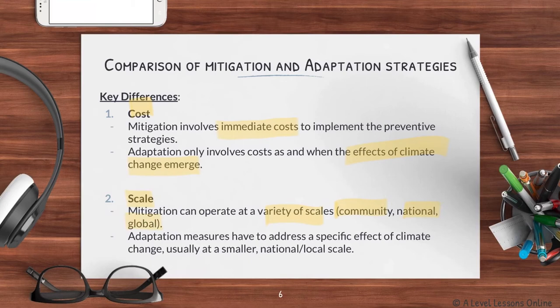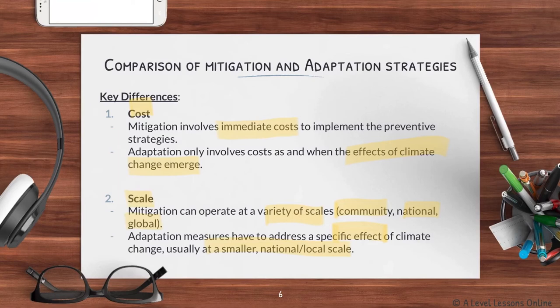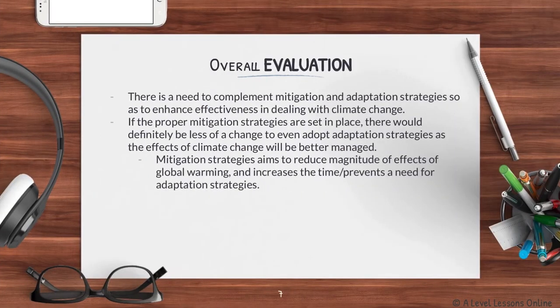They also differ on scale. Mitigation operates on a variety of scales — from community to national to global — while adaptation measures have to address that specific effect of climate change at that specific area. For instance, if a river channel overflows, there is a need to address only that specific river. Hence, not every single area will require adaptation; those that are well mitigated can prevent adaptive strategies from needing to be implemented.